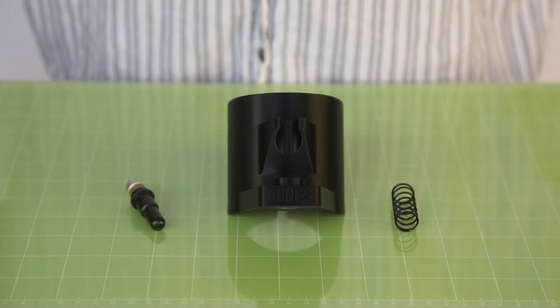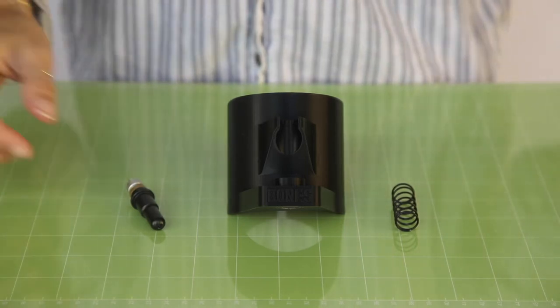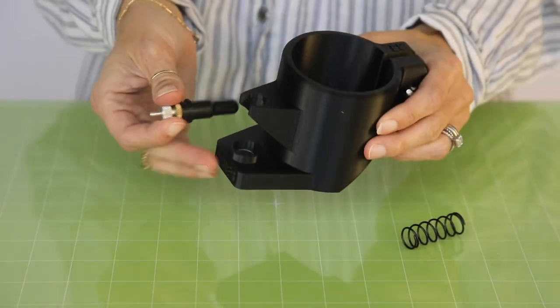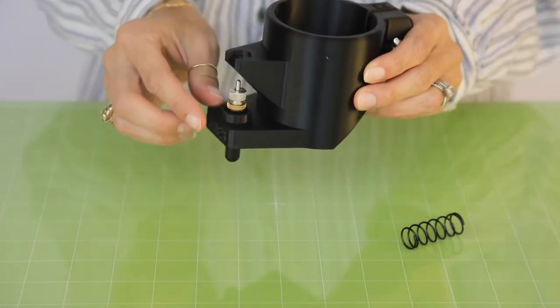Once the blade height is set and locked, you can load the blade holder into the mount. Load the blade holder by inserting it into the base of the mount.